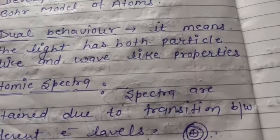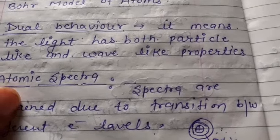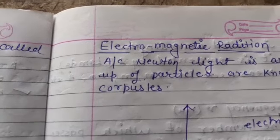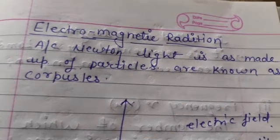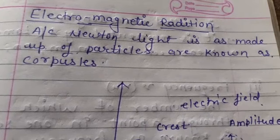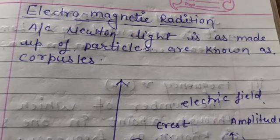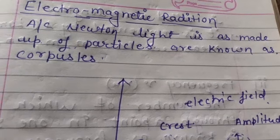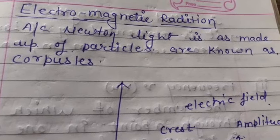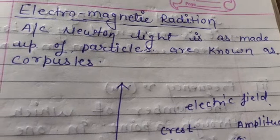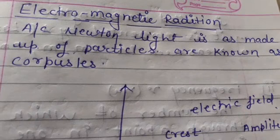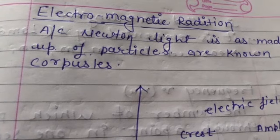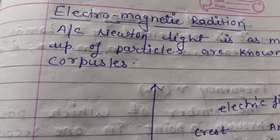In terms of energy levels, electron transitions produce lines — this is atomic spectra. To explain the dual nature of light, the first concept is electromagnetic radiation. According to Newton's concept, light is made up of small particles known as corpuscles. Corpuscles are the smallest particles, just like dust particles.